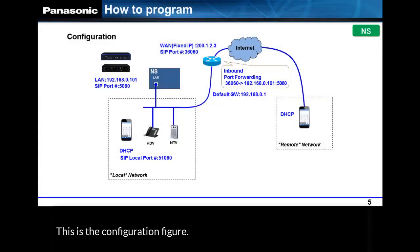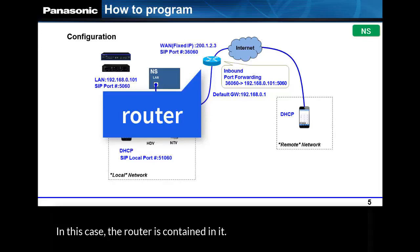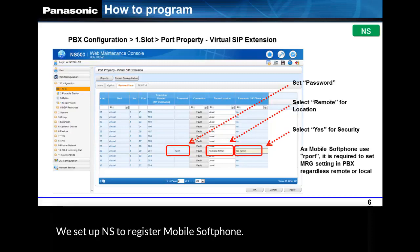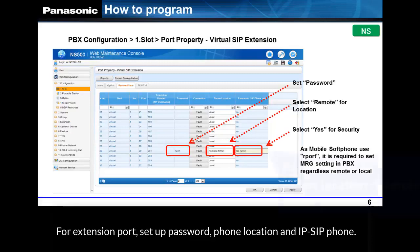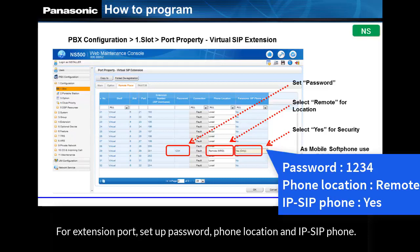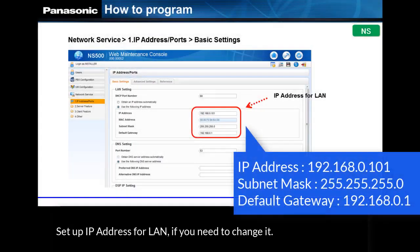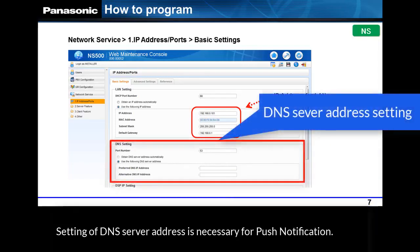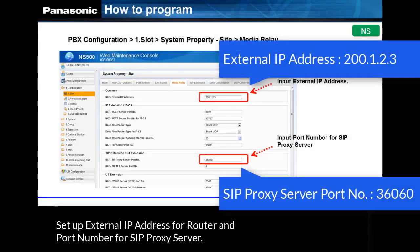This is the configuration figure. In this case, the router is contained in it. We set up and ask to register Mobile Softphone. For the extension port, set up the password, phone location, and IP SIP phone. Set up the IP address for LAN if you need to change it. Setting of the DNS server address is necessary for push notification. Set up the external IP address for the router and port number for the SIP proxy server.